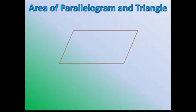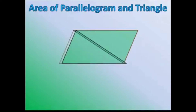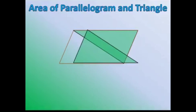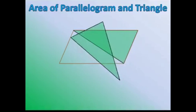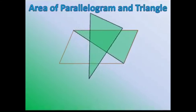Now let us see how to find out the area of a triangle. From a parallelogram, we can cut along the diagonal, and we get two triangles. If we superimpose one triangle over the other, we can see that both triangles have equal area.